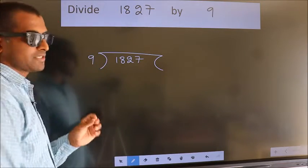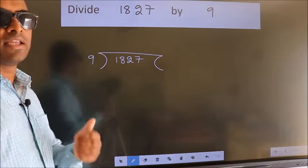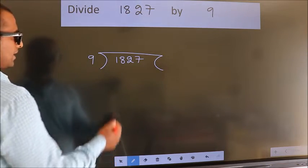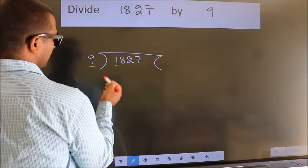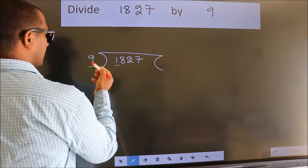This is your step 1. Next, here we have 1. Here 9. 1 is smaller than 9.